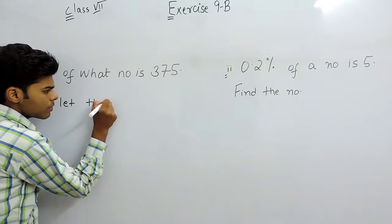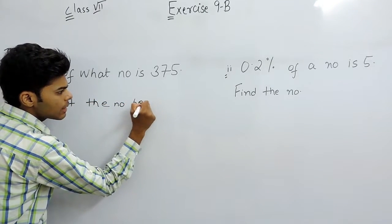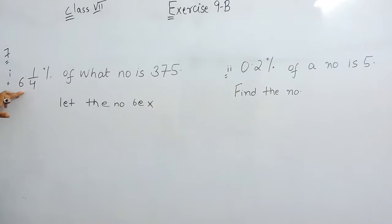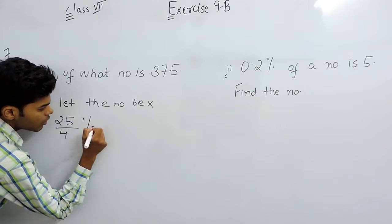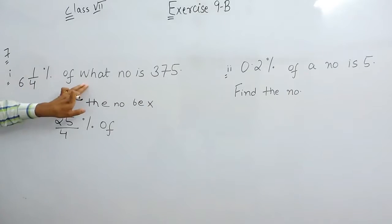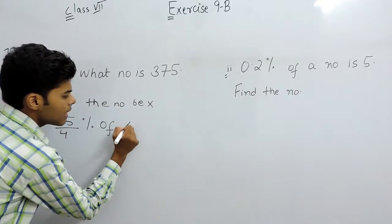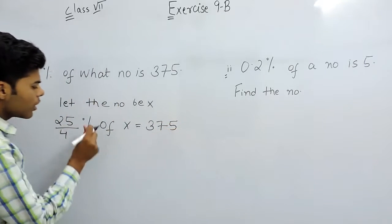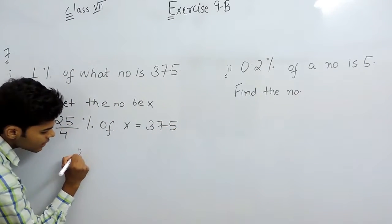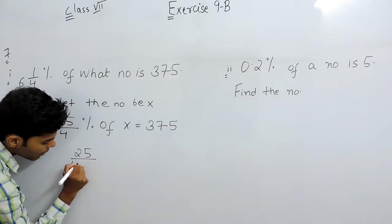Let the number be x. Then the question says that 6 1/4 percent, that means 25/4 percent, of that number x is equal to 375. So we will remove this percentage sign and 100 will come in the denominator.